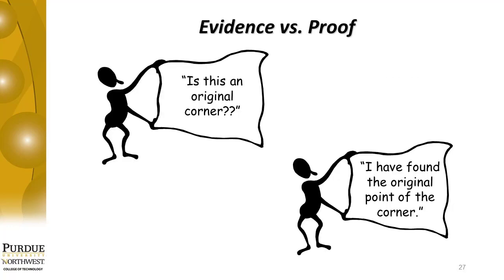There are example statements showing the difference between a question based on evidence and a statement based on proof. Consider the question: is this an original corner? Does the recovered evidence as it relates to the documented evidence describing that particular corner correlate to the found evidence on the ground? If so, then the evidence creates the following in the mind of the surveyor: I have found the original point of the corner. The found evidence proves the original corner location. You can see the difference between how you treat something as evidence versus the result of evaluating evidence as proof.